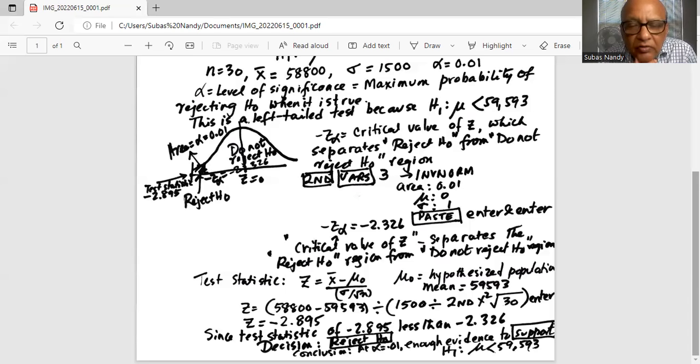Conclusion at alpha equal to 0.01, there is enough evidence to support the alternate H1, which is mu less than $59,593. I will stop here today.